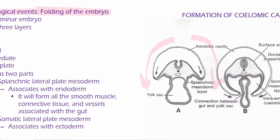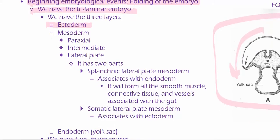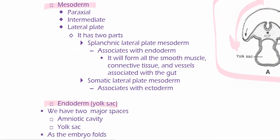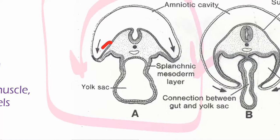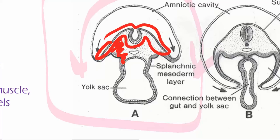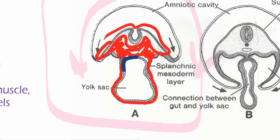At this stage we have the trilaminar embryo — meaning it has ectoderm, mesoderm, and endoderm. We can see the ectoderm right here. The mesoderm is all of this. And then the endoderm was this right here.